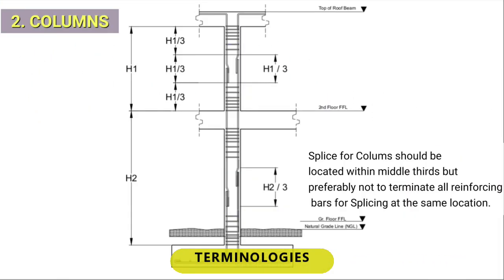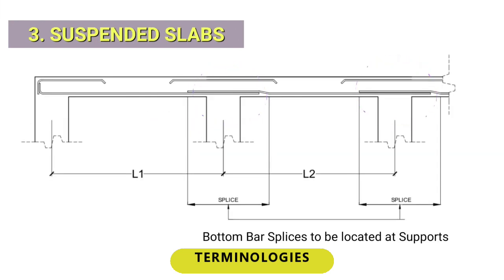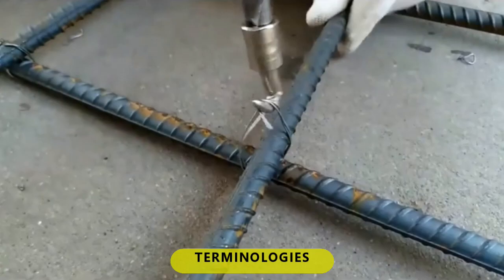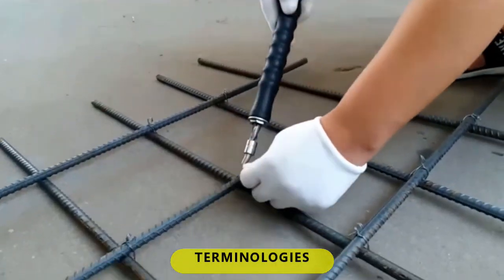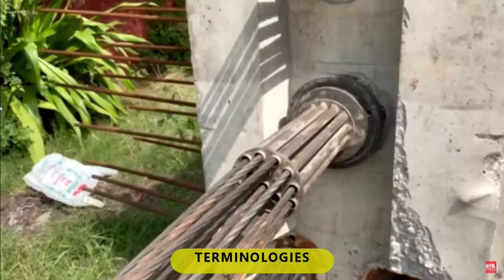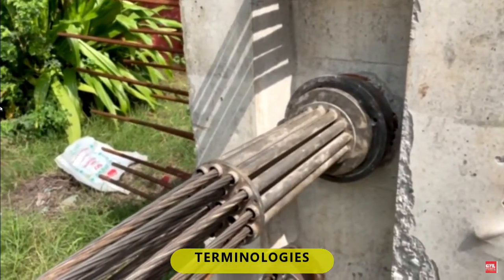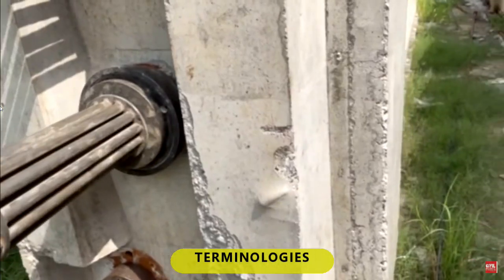19. Splice — lapping of vertical reinforcing bars on columns, and lapping of horizontal bars on beam and slab. 20. Tie wire — a soft steel wire used to fasten steel bars in place. 21. Tendon — strands of steel or bar that is pre- or post-tensioned to pre-stress a concrete.